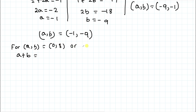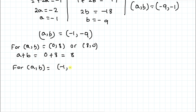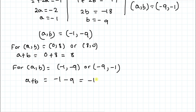So for a comma b equals to 0 comma 8 or 8 comma 0, we get a plus b equals to 0 plus 8 which equals to 8. And for a comma b equals to minus 1 comma minus 9 or minus 9 comma minus 1, we get a plus b equals to minus 1 minus 9 which equals to minus 10. So 8 and minus 10 are our answers. I hope you have understood the solution. Thanks for watching. Please subscribe to my channel and click the bell icon for more such interesting videos. Thank you.